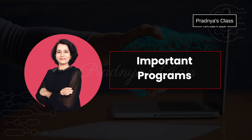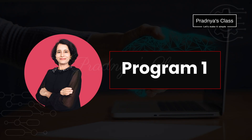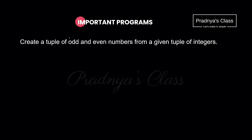After taking a small tour of the basic concepts, we are ready to write programs. Here is program number 1. We have to write a program to create a tuple of odd numbers as well as even numbers from the given tuple of integers. If you know how to write the code, pause the video and try it yourself. It's very simple. Let's try to understand the logic of the program.